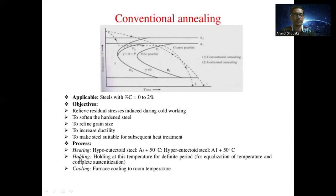The second step in conventional annealing is holding at that temperature for a definite period for equalization of temperature and complete austenization. The third step is cooling — furnace cooling to room temperature is the cooling method for conventional annealing.